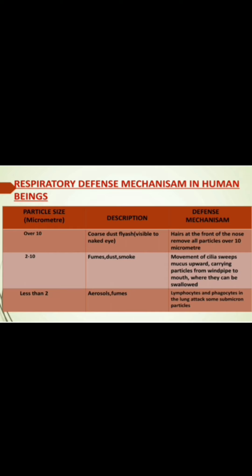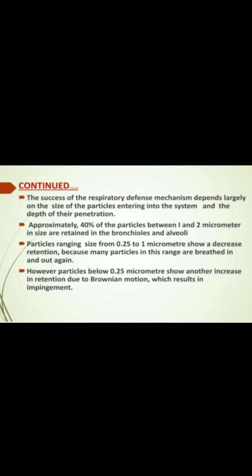Particle Size Dispatch: First, particles over 10 micrometres — coarse dust — are filtered by hair at the front of the nose, which removes all particles over 10 micrometres. For the 2 to 10 micrometre range, including fumes, dust, and smoke, movement of cilia and mucus supports carrying particles from the windpipe to the mouth where they can be swallowed. Less than 2 micrometres — aerosols and fine fumes — lymphocytes and phagocytes attack submicron particles. The success of the respiratory defense mechanism depends largely on the size of the particles entering the system and the depth of their penetration.